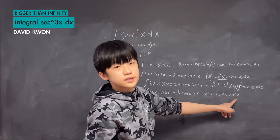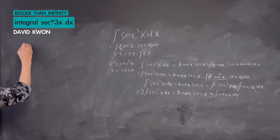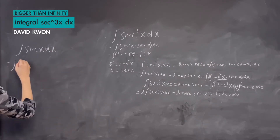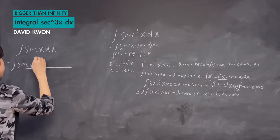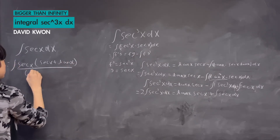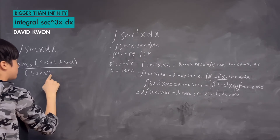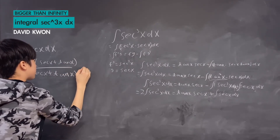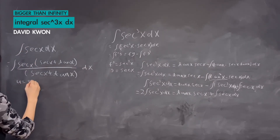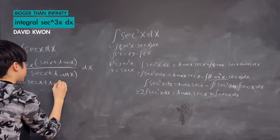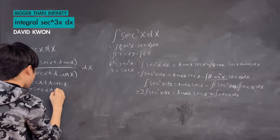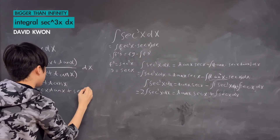The integral of secant x — we did that in a previous video but I will do it again. For the integral of secant x dx, I multiply the top and bottom by secant x plus tangent x. Then I use the u-substitution rule, setting u equal to secant x plus tangent x.